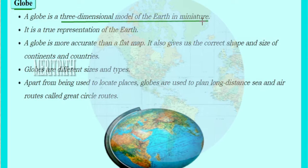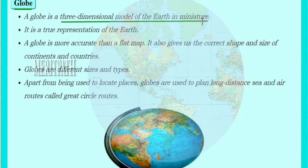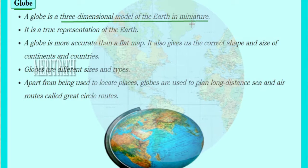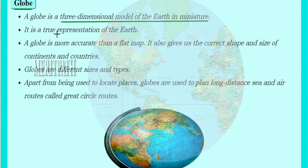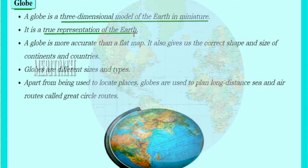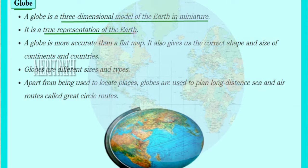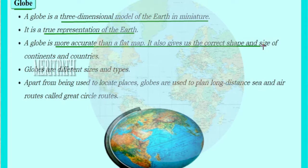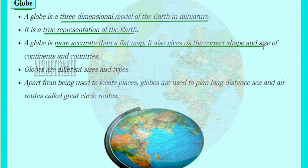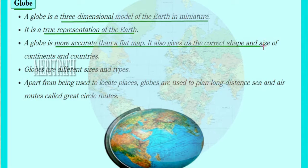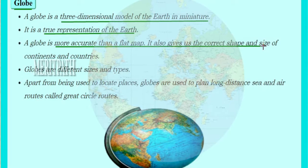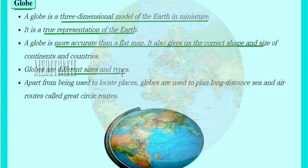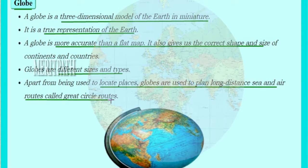A globe is a three-dimensional image, a 3D model of the earth in miniature, representing the total earth. It is a true representation of the earth, making it more accurate than maps. The globe also gives us the correct size and shape of different continents as well as different countries. Globes come in different sizes and types.